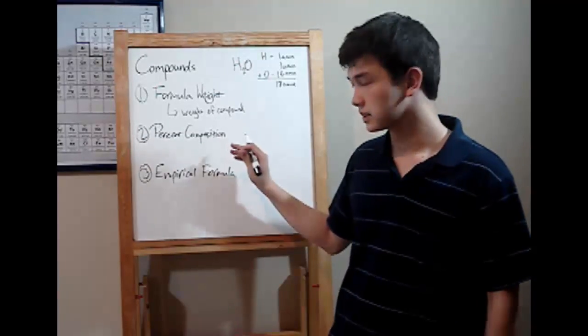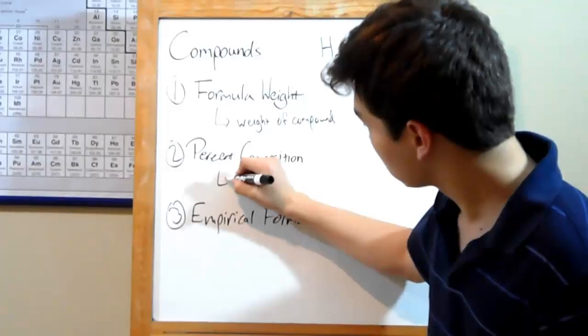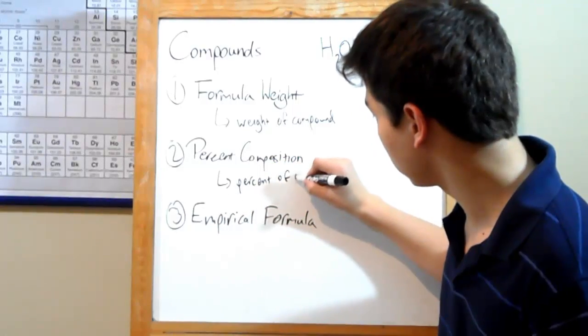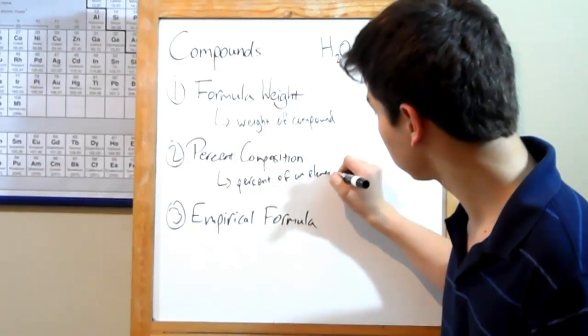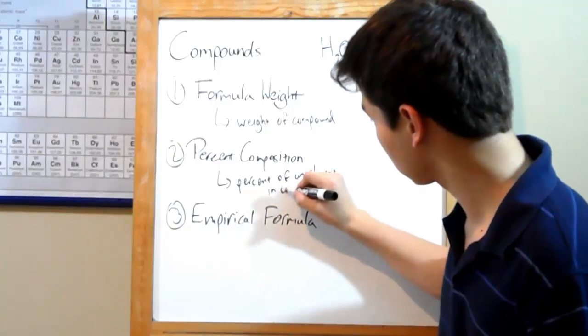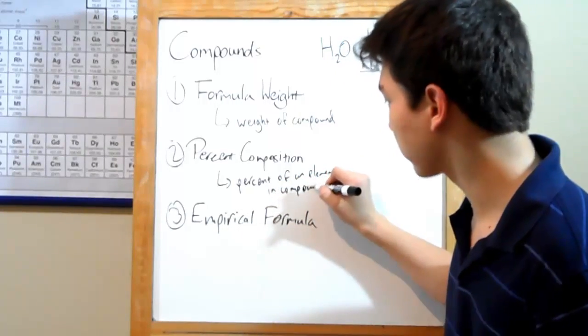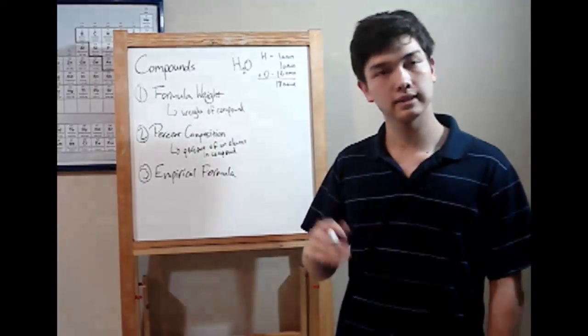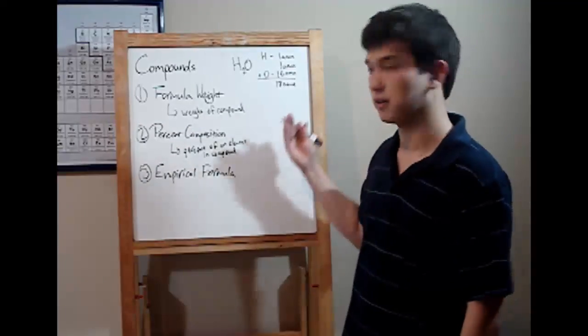Okay. Percent composition. This is the percent of an element in a compound. This is easy to figure out. So, let's take water, for instance. Let's say our question was, what is the percent composition of hydrogen and water?